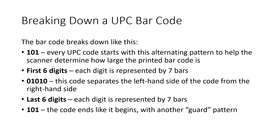Here's how the code breaks down. The guard patterns at the beginning and end of every UPC code are just a 101 — a single dark bar followed by a single light space, followed by a single dark bar. You'll see that at the beginning of each code and at the end of each code. After the 101, you have the first six digits of the code, and each digit is going to be represented by seven bars.